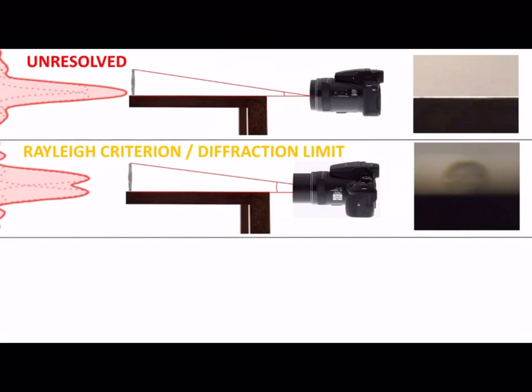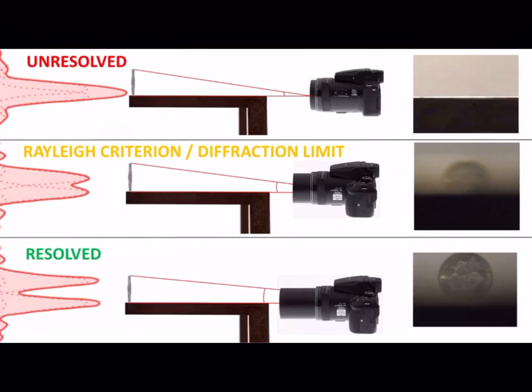But when you zoom back in, you increase the focal length and you increase the angle at what you are viewing that object. Now when you zoom in enough, it will meet the Rayleigh criterion, where you can see the two distinct objects again. The coin and the table. And when you get past that diffraction limit, you can fully resolve the object.